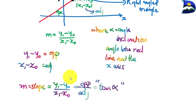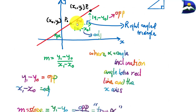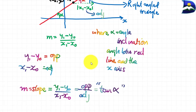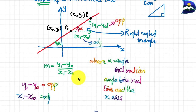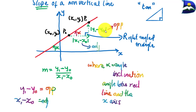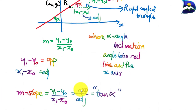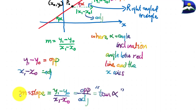In conclusion, tan(alpha) is the angle made between our line and the horizontal x-axis. Tan(alpha) equals the opposite over the adjacent, which is y1 minus y0 (the rise) over x1 minus x0 (the run). This ratio is exactly equal to the slope of the line.